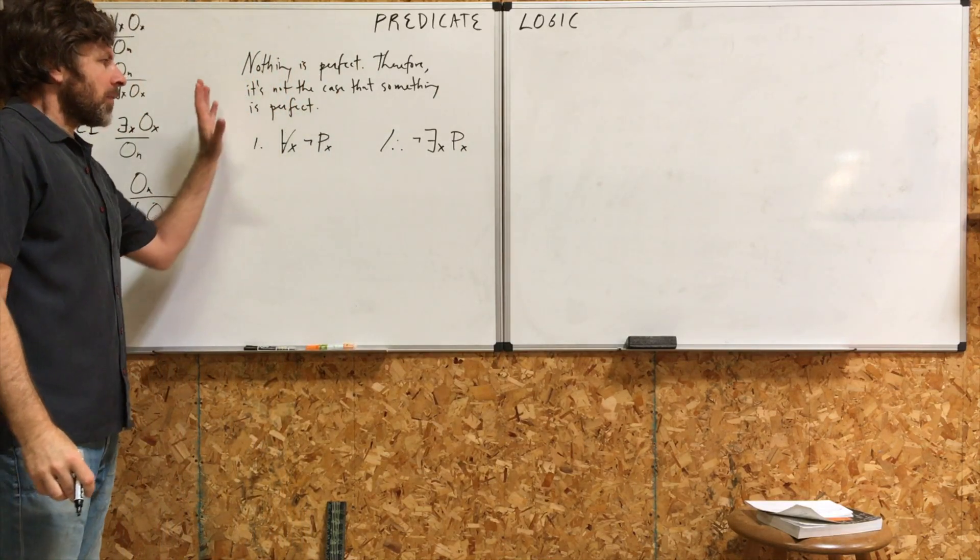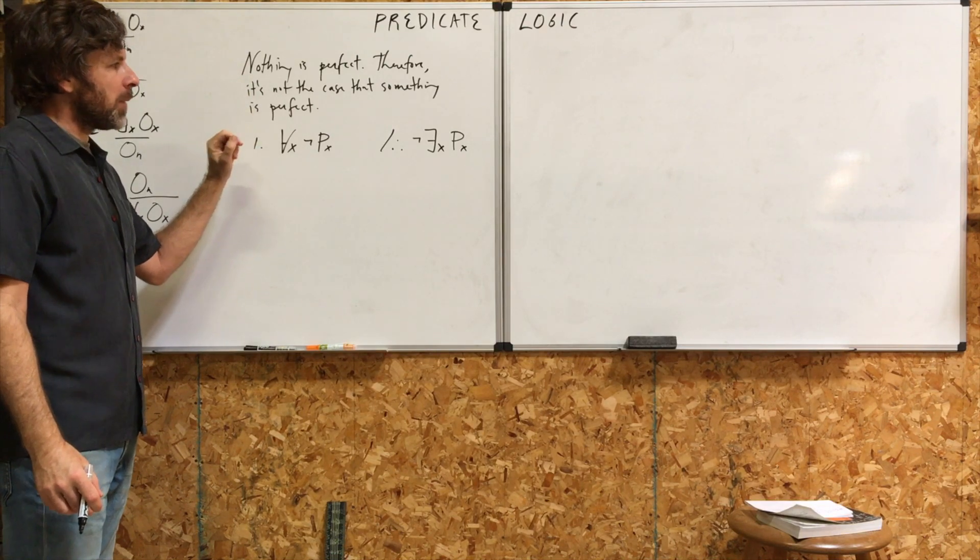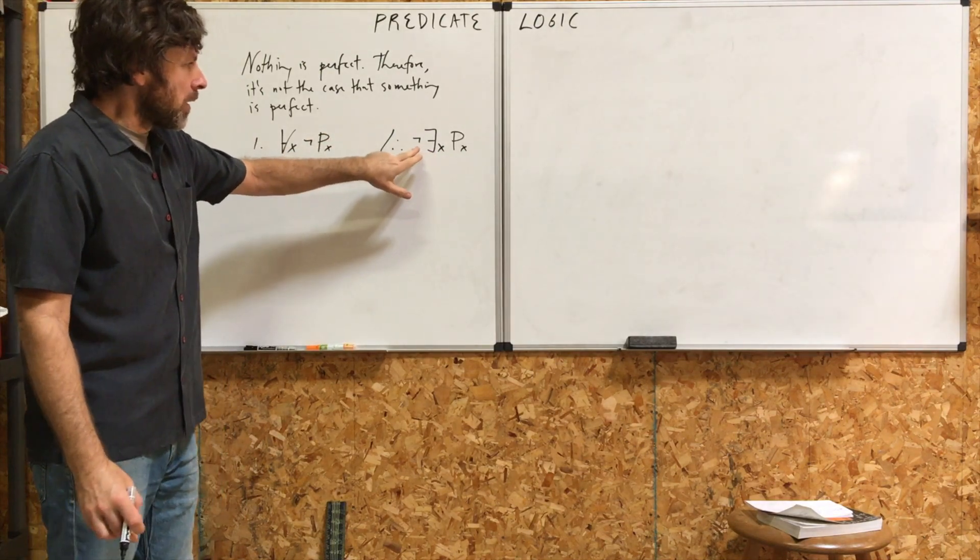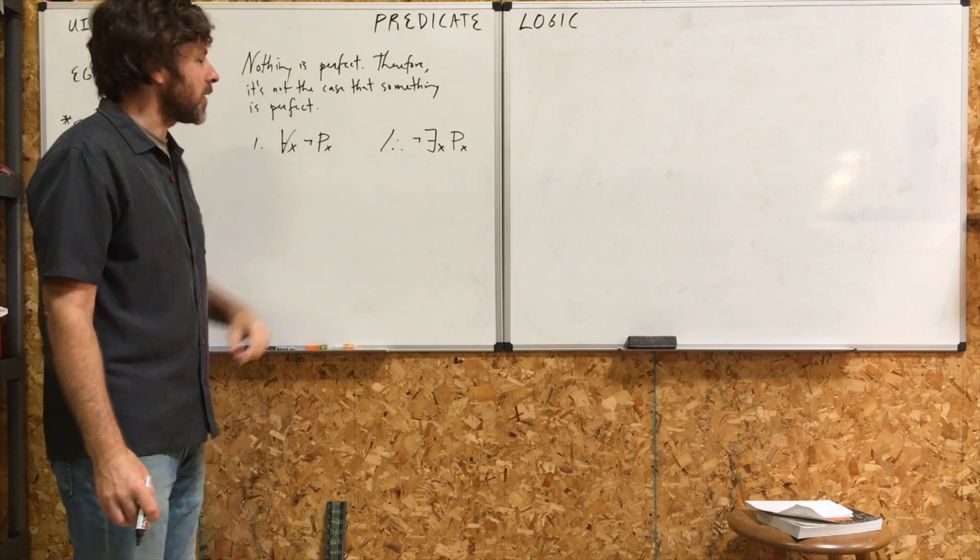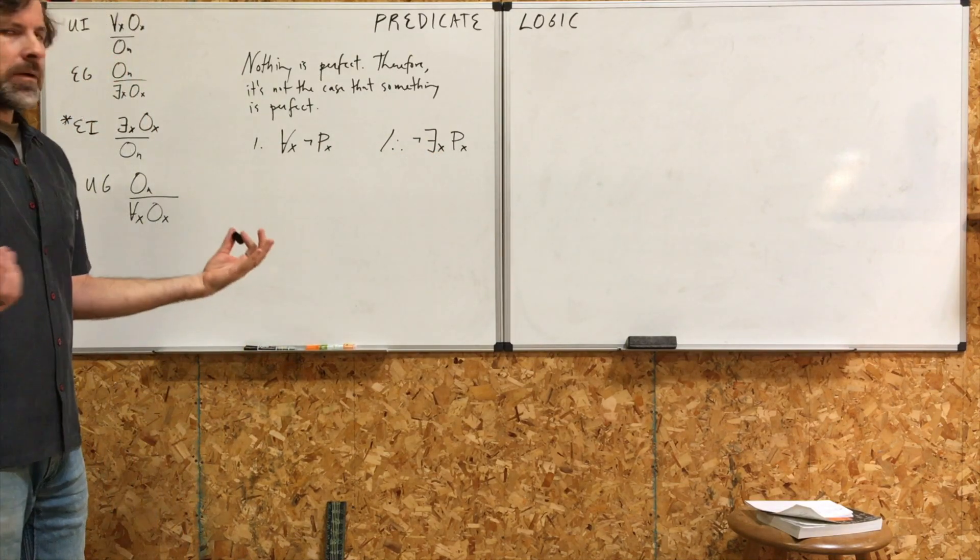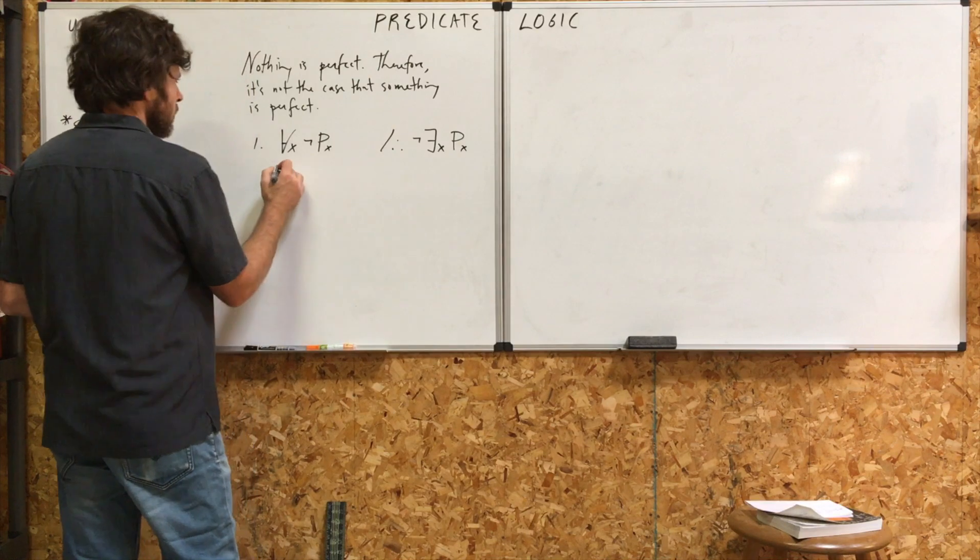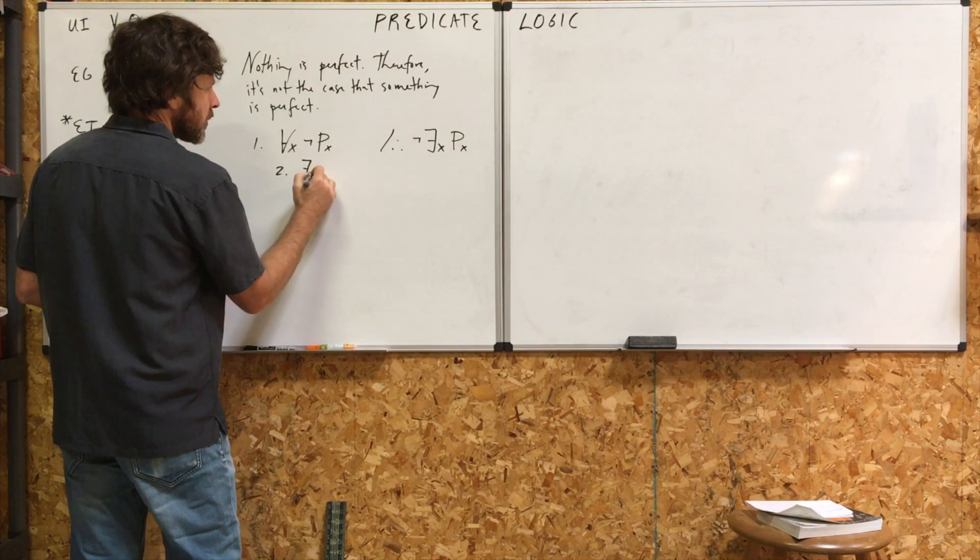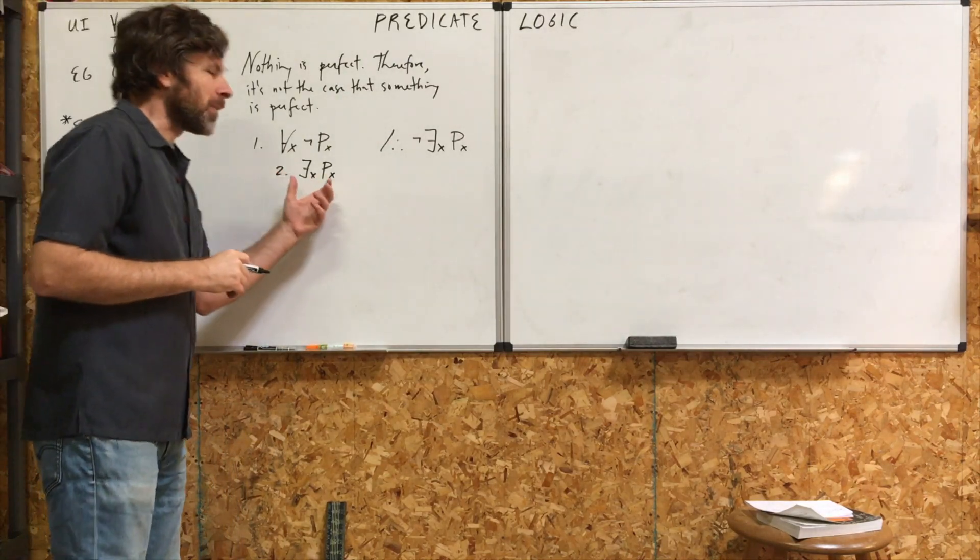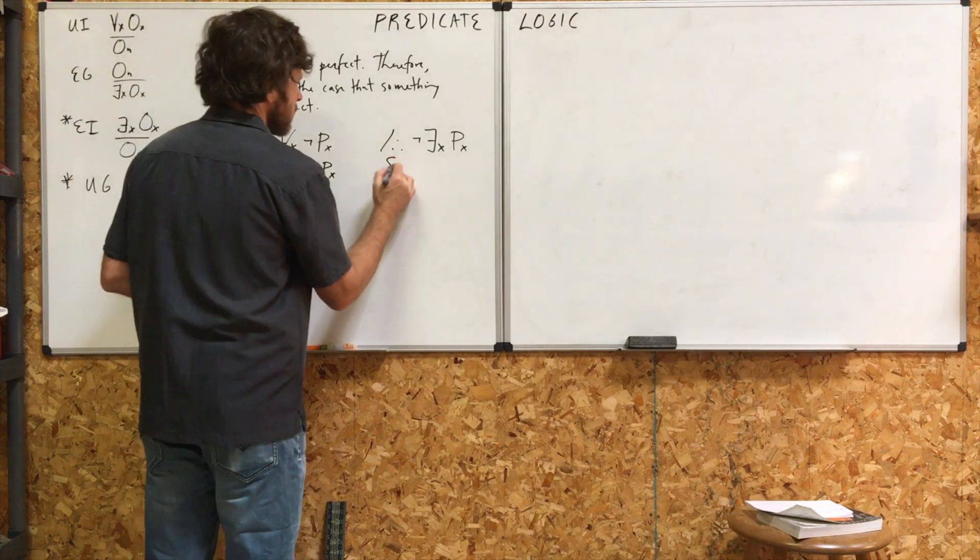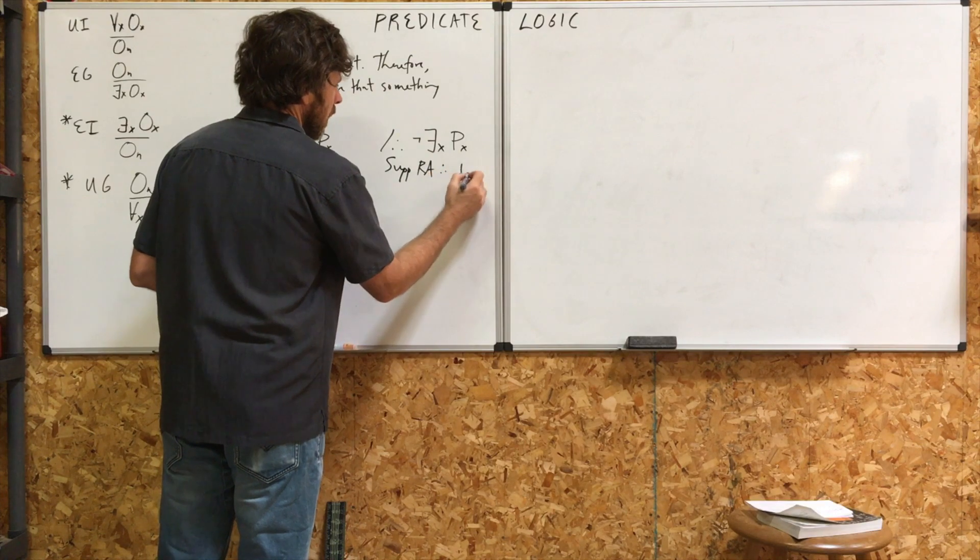Now, we have no direct way of doing this proof. And we have no rule to allow us to derive the negation of an existential quantification. So, we know what to do. If you don't know what to do, you do reductio. So, we're going to suppose line two here, the negation of what we want to prove.